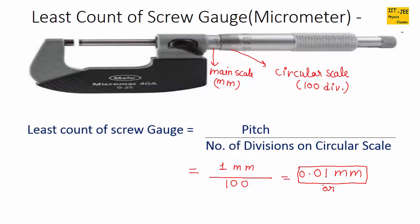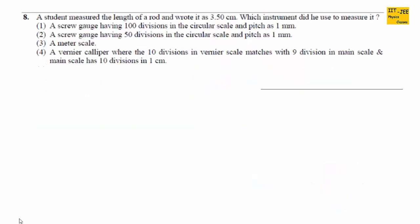You can also convert the least count into centimeters. Since 1 centimeter equals 10 millimeters, you divide 0.01 mm by 10, giving 0.001 centimeter. So the least count of the screw gauge is 0.001 centimeter.